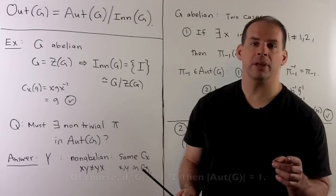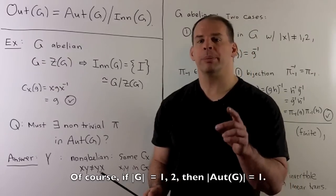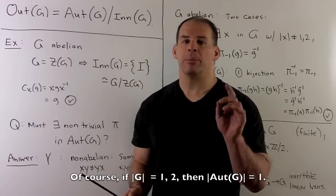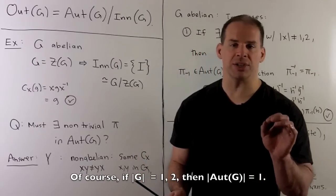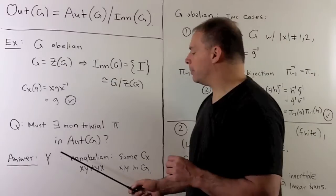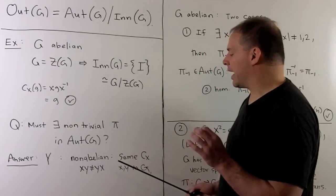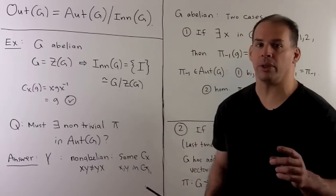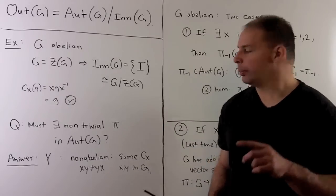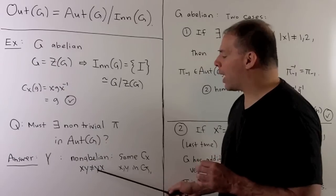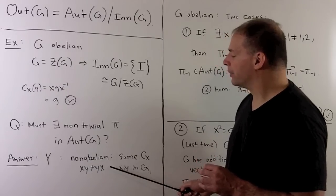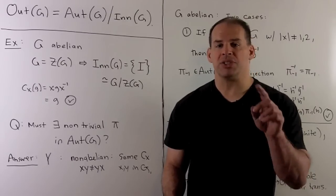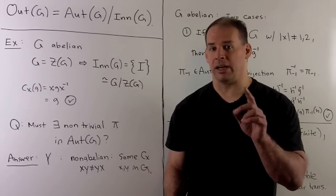That raises the question: given a group, must there be a non-trivial automorphism? The answer is yes, but we need to answer in a few cases. If our group is non-abelian, there's an easy answer: there will be some inner automorphism c_x that's non-trivial. Somewhere in the group we can find x and y with xy ≠ yx, so xyx⁻¹ ≠ y, meaning c_x is not the identity map.